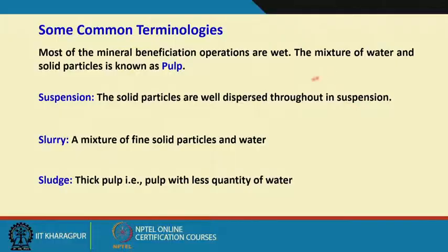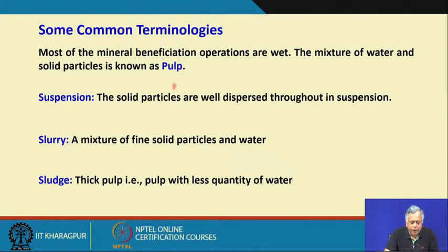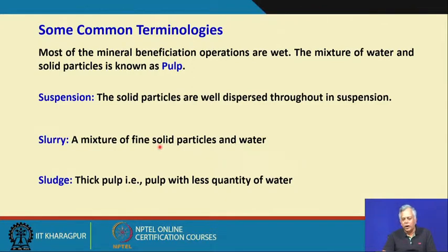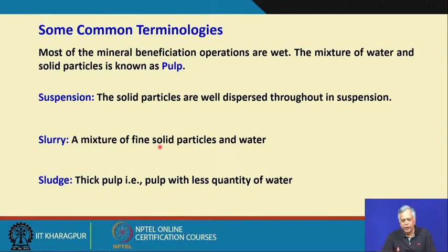In a suspension, the solid particles are well dispersed throughout — meaning it has got minimal effect of sedimentation or settling. Slurry is normally defined as a mixture of fine solid particles and water. The difference between pulp and slurry is that slurry involves fine solid particles, so slurry density becomes very important because most of the particles will be in suspension, and there are rheological aspects because fine particles have large surface area, which may impose resistance to normal flow characteristics of the fluid.